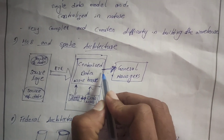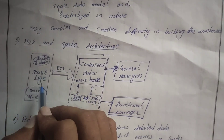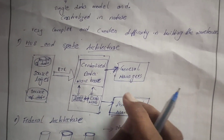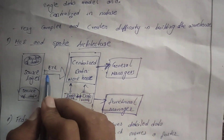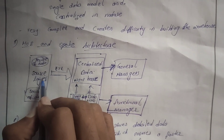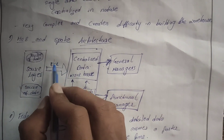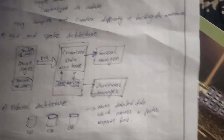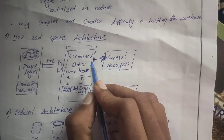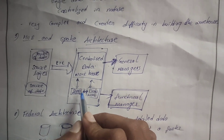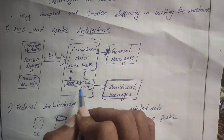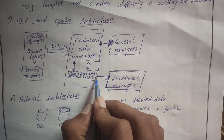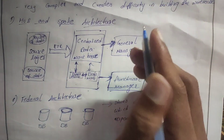Next, hub and spoke architecture. Here the hub is the data stored centrally in the data warehouse. The spokes are the source layer, data marts, and functional managers. In the source layer, data is extracted and by using an ETL tool it is stored in the centralized data warehouse. This centralized data warehouse will be accessed by general managers, while functional managers access specific data marts for related or particular data.